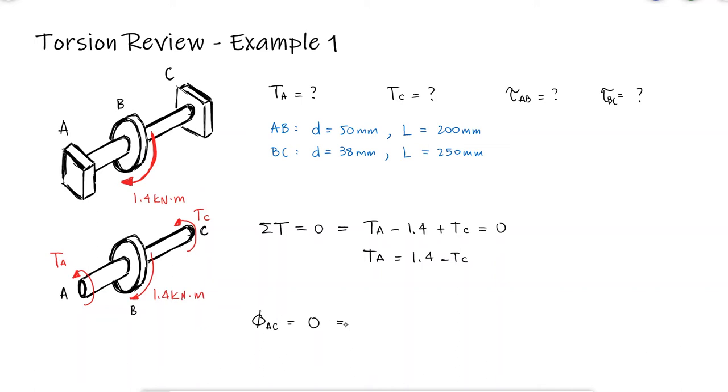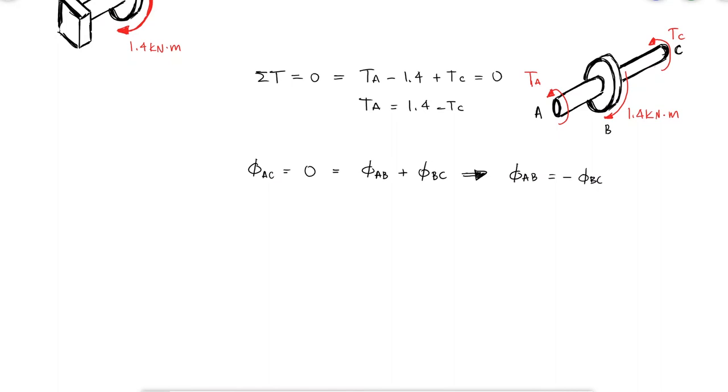Since I know that the angle of twist of A with respect to C is 0, and that that angle of twist is equal to the angle of twist of A with respect to B plus the angle of twist of B with respect to C, I know that phi AB is equal to minus phi BC.